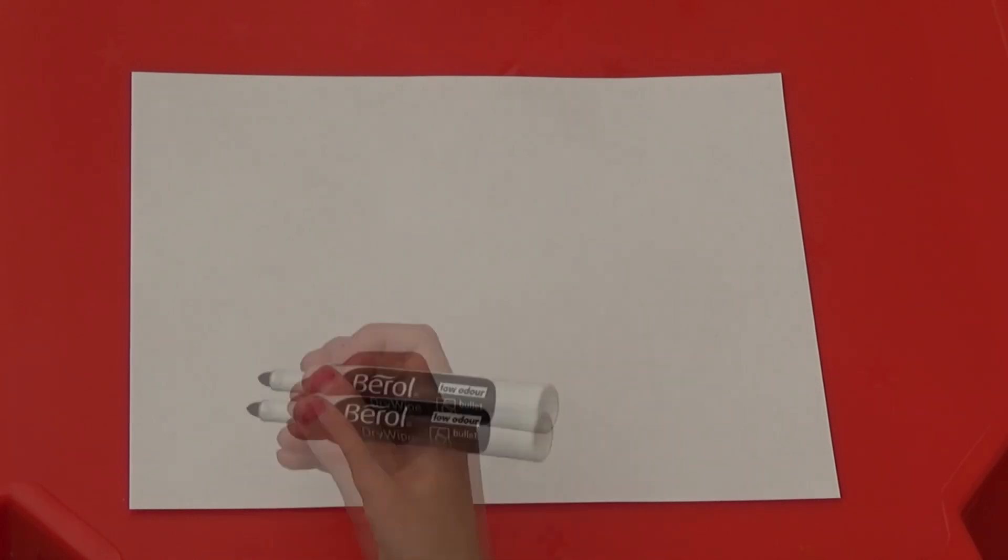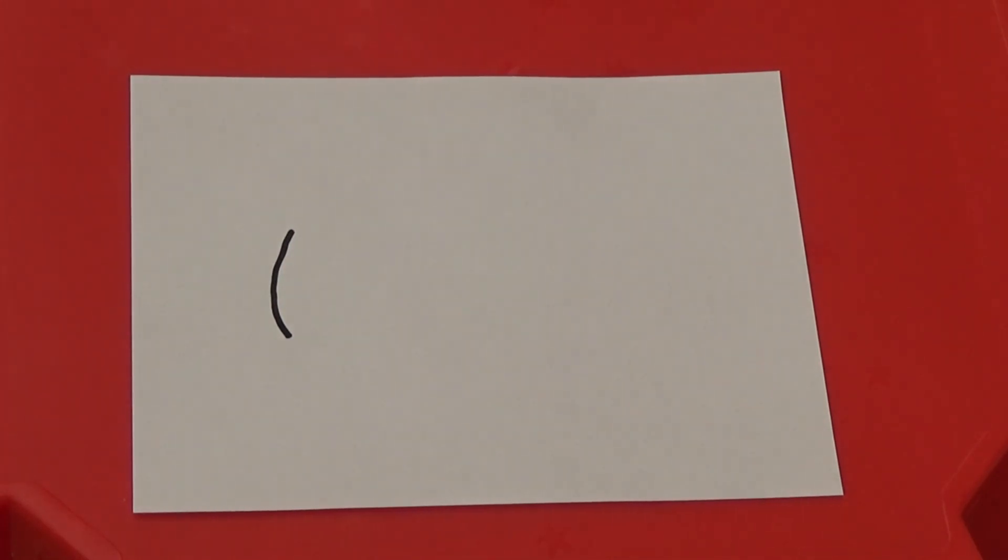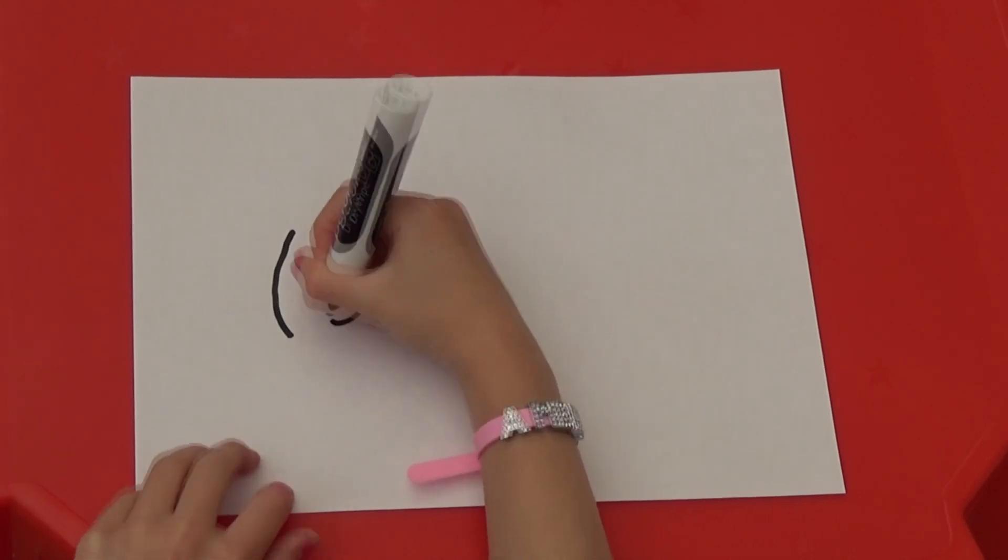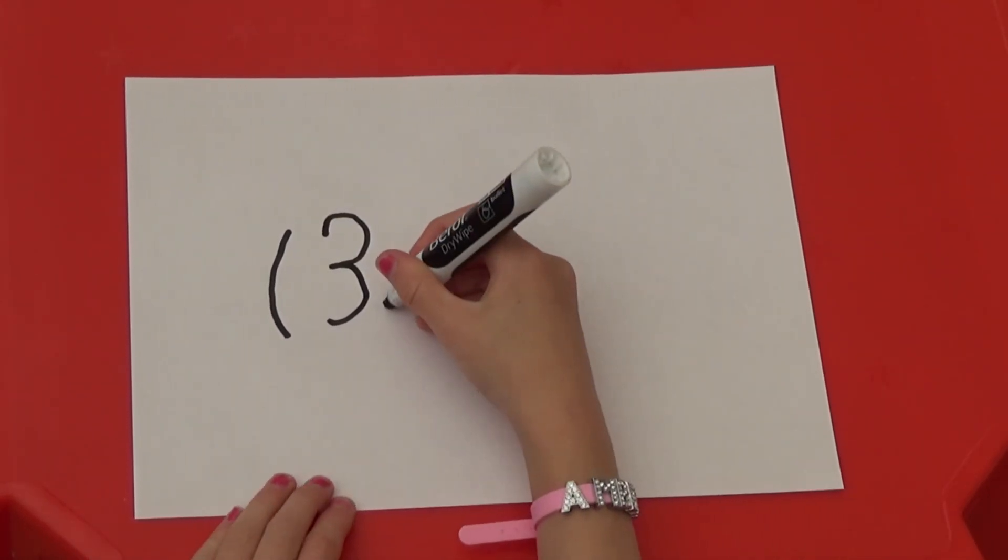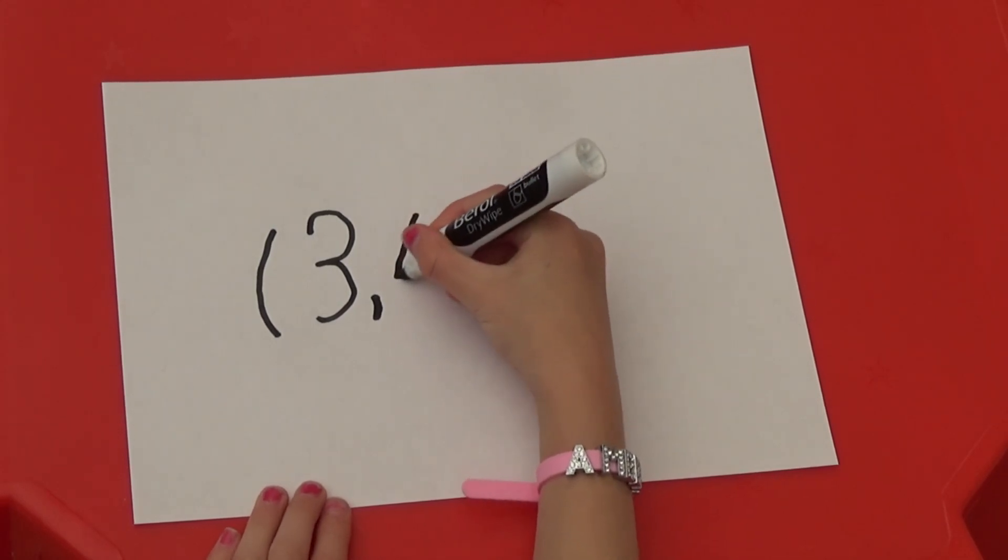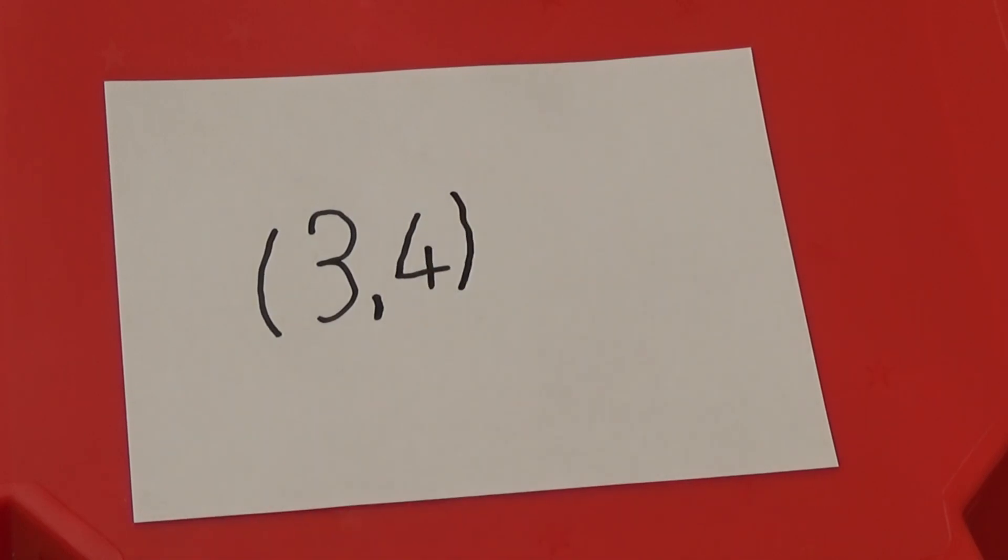To write down the coordinates I need to start with a bracket. Then write the x-axis coordinate which is three. A comma. And then the y-coordinate which is four. So the coordinates are three, four.